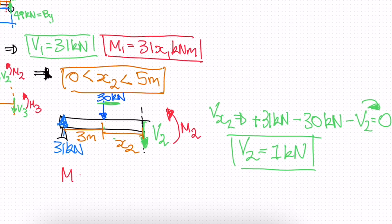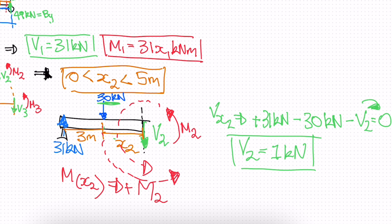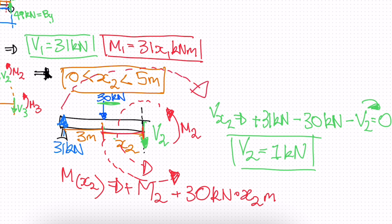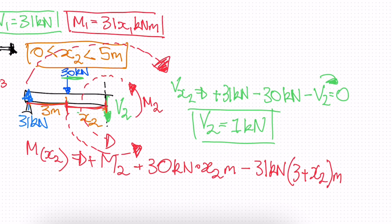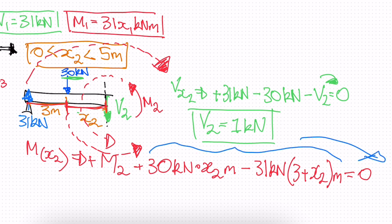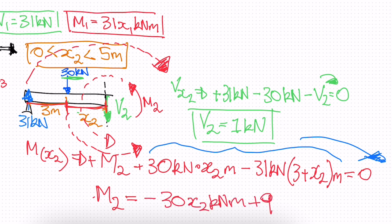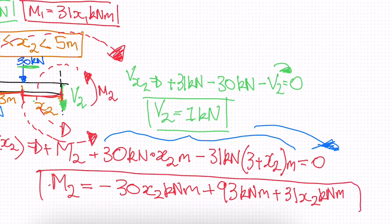For the moment function M(x2), taking moments about the cut: positive M2 plus 30·x2 minus 31·(3 + x2) = 0. Expanding and rearranging, M2 = 30·x2 + 93 + 31·x2 kilonewton-meters. That's our moment function for the second section.